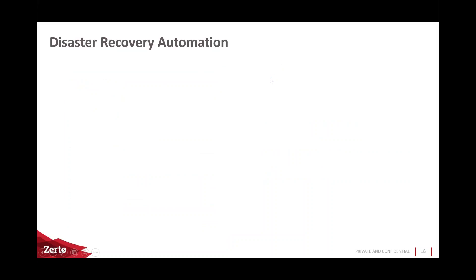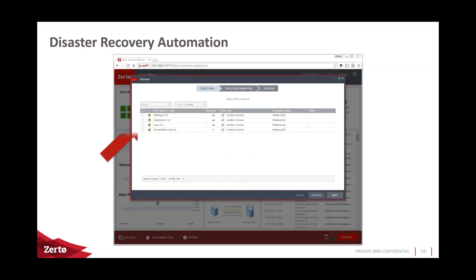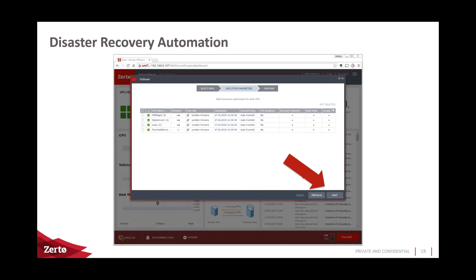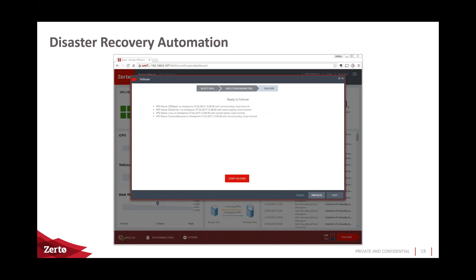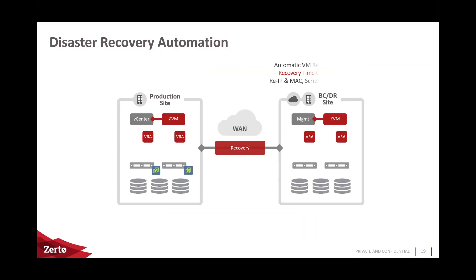For disaster recovery automation, you simply log into your recovery site Zerto Manager, click the live failover button, select which applications to recover — one or a subset — choose advanced options like which point in time to recover to, and verify it works before deleting the journal. Then click Start Failover and Zerto fully automates and orchestrates the recovery process with boot ordering, VIP addressing, MAC address changes, scripts, and the commit policy, delivering a recovery time objective of just minutes — literally the time it takes to boot the virtual machines.